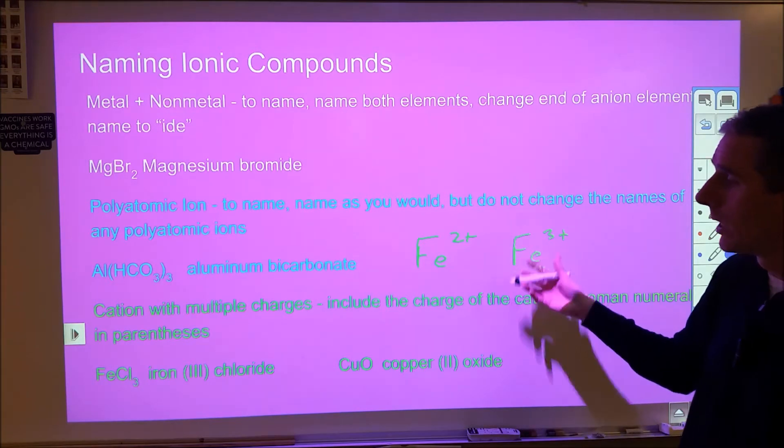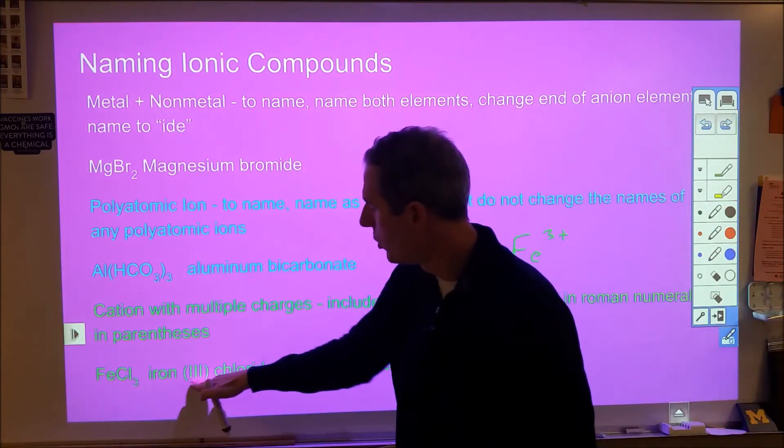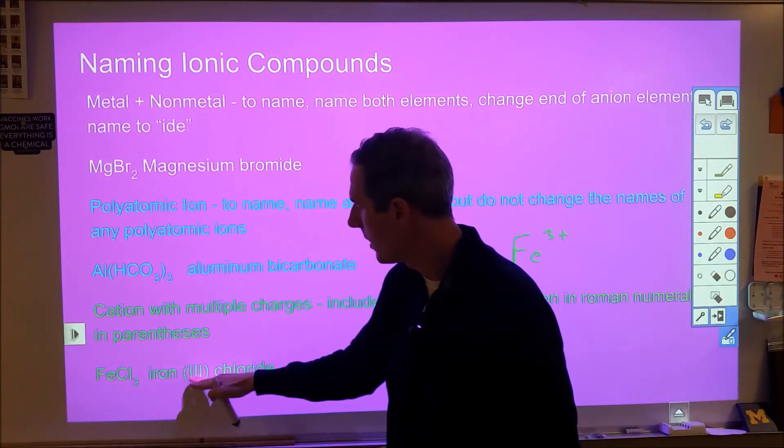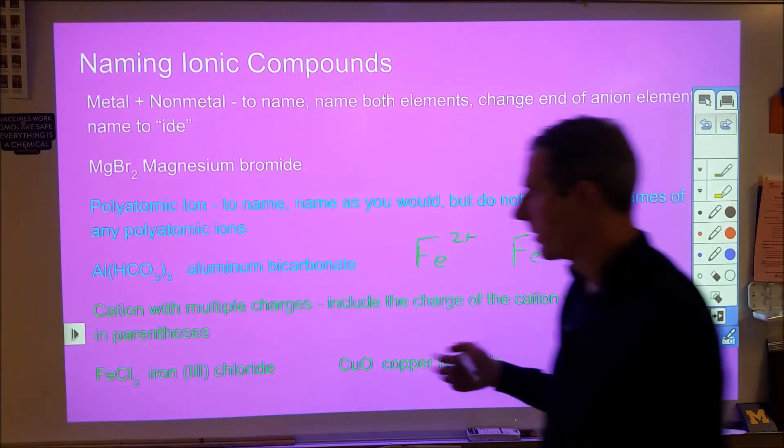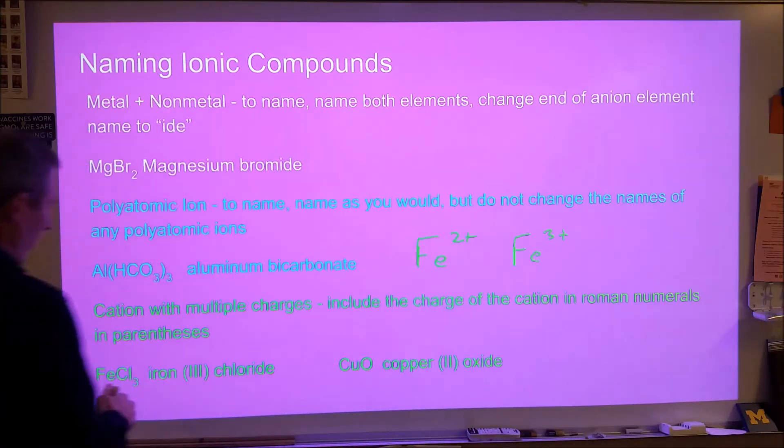Iron two chloride or iron three chloride. So what we do for that is we just put roman numerals of what the charge of the metal is in parentheses. Now that's simple but a lot of people will see this and you're learning a lot of stuff all at once.